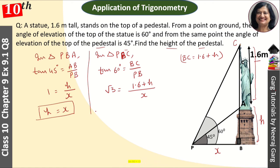Since x equals H, root 3x equals 1.6 plus H. So root 3H equals 1.6 plus H. Bringing H to one side: root 3H minus H equals 1.6. Taking H common, H times (root 3 minus 1) equals 1.6. Therefore H equals 1.6 upon (root 3 minus 1).